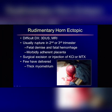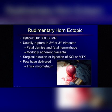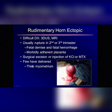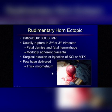Here's a surgical specimen from a patient in our hospital who had such a pregnancy in the horn; at 10 weeks it had started growing. There was a lot of consternation about how to handle this because the diagnosis was very difficult — we did 3D and MRI. The problem is that these usually rupture in the second or third trimester, leading to fetal demise and hemorrhage, and the placenta becomes morbidly attached in the pelvis. Usually they are excised, though sometimes they can be injected with potassium chloride or methotrexate; there have even been rare reports of delivery in cases with a thicker surrounding myometrium.